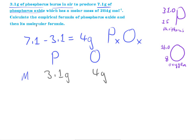And now, we can use a periodic table to work out the molar masses. So, the molar masses, big M, would be for phosphorus it would be 31, and for oxygen it would be 16.